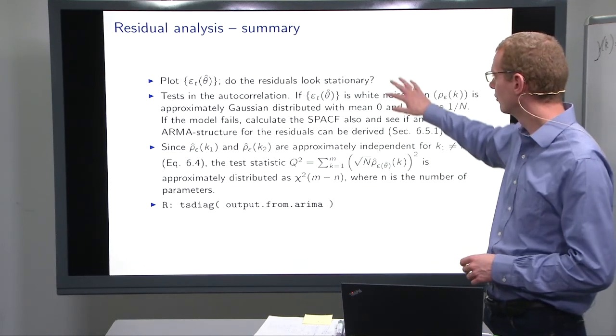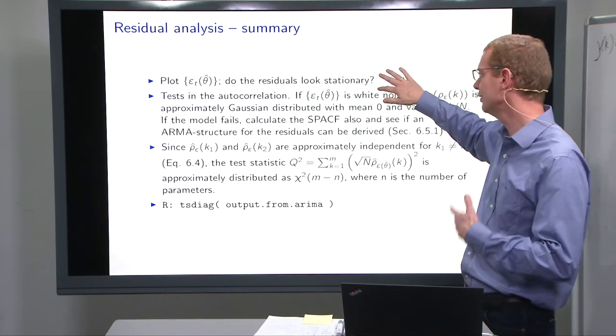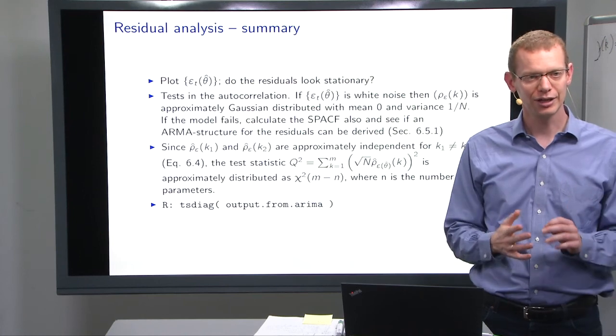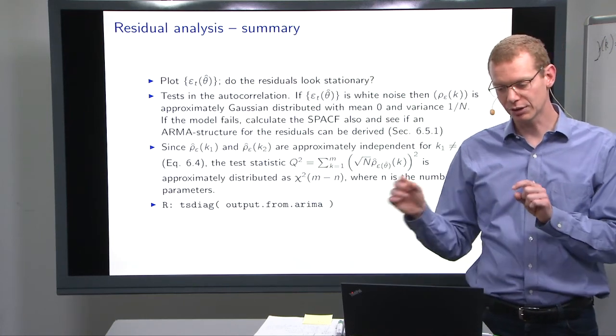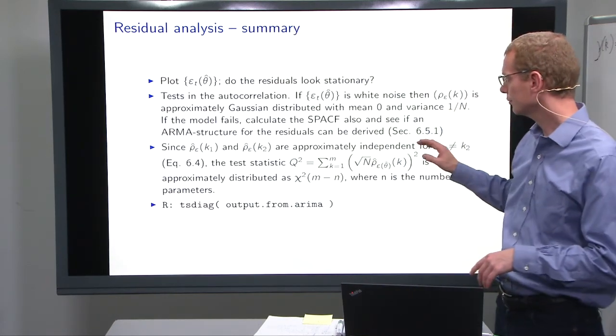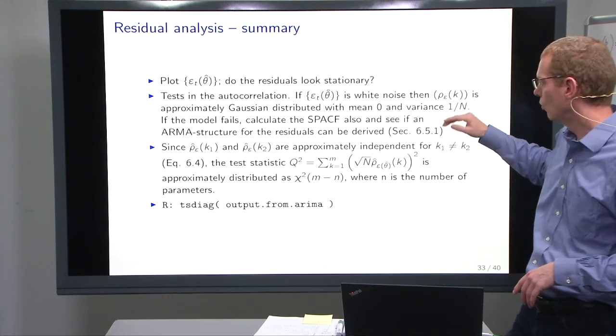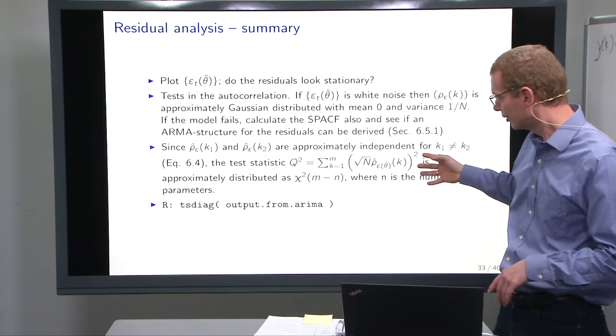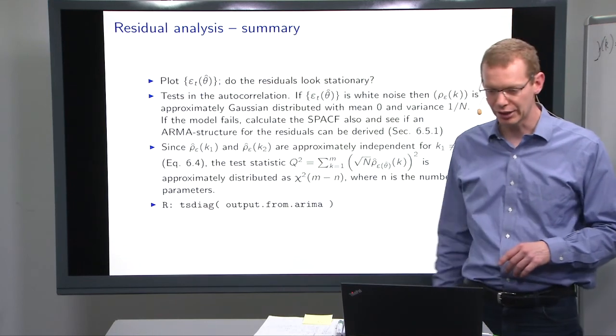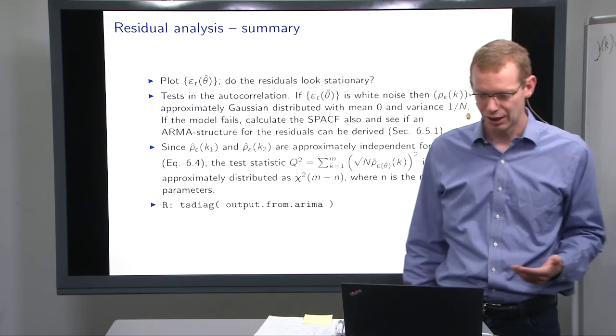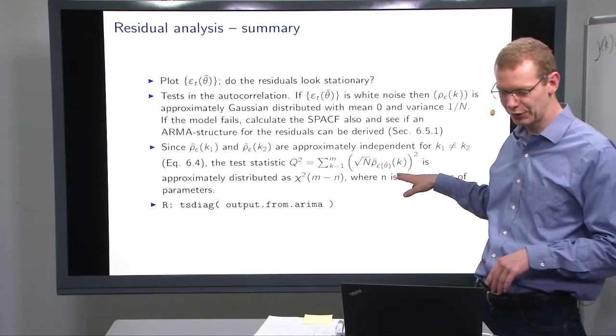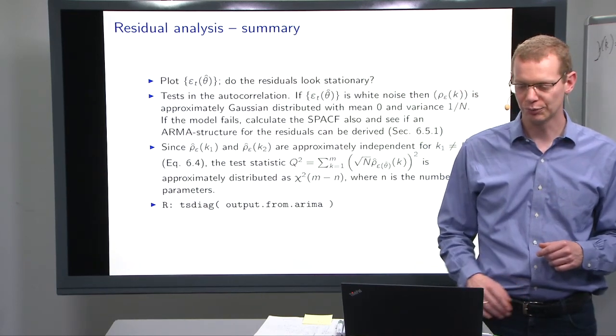In summary, plot the residuals. Do they have any weird patterns? Test the autocorrelation function. Feel free to do the tsdiac function in R. It does the Ljung-Box test, which is exactly doing what we have here. We call it the Ljung-Box test, and it's what you get from the tsdiac. Look at the autocorrelation function for the individual elements as we did, but also look at the sum of elements of the autocorrelation function to do the Ljung-Box test.